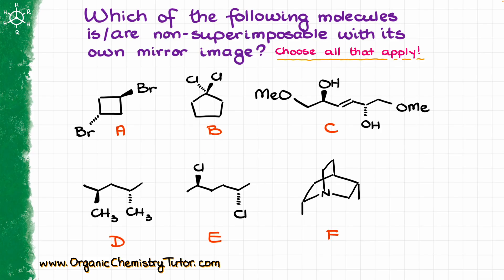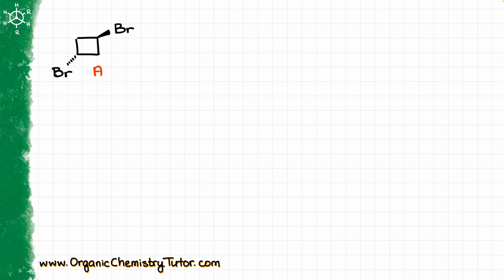We want to find out all compounds that do not superimpose with their own mirror reflections. Well, let's check them out one by one and see which fit the criteria for us and which do not. Starting with molecule A here, there are multiple different ways how we can create a mirror reflection to begin with.